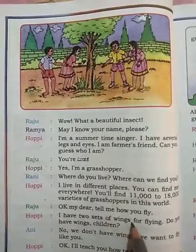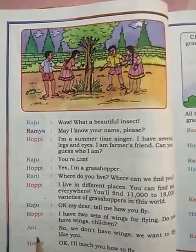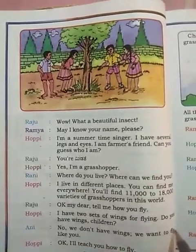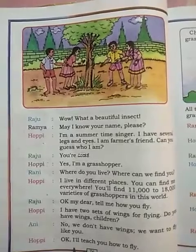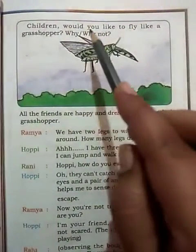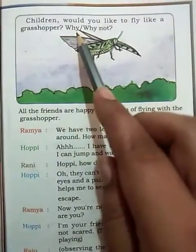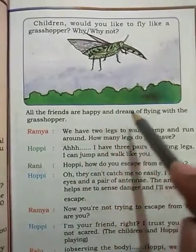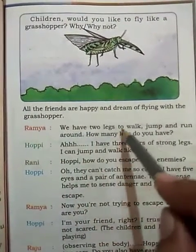Hoppy: I have two sets of wings for flying. Do you have wings, children? Ani: No, we don't have wings. We want to fly like you! Hoppy: Okay, I will teach you how to fly. Children, would you like to fly like a grasshopper? All friends are happy and dream of flying with the grasshopper.